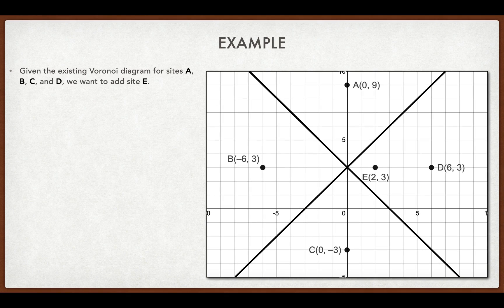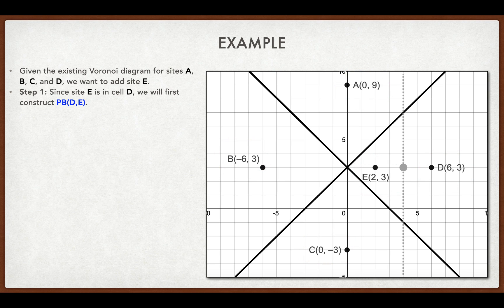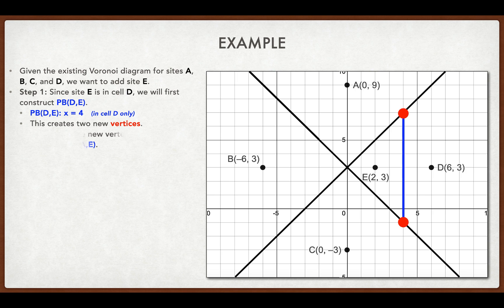Here's a final example. We're going to look at this diagram — it's got four cells already and I want to add a fifth site which I'm calling E. Since site E is already in cell D, I'm going to construct a perpendicular bisector between D and E. There it is right there — it has equation x equals 4. Notice how there are two new vertices created, and from here I can choose which vertex to start from to create the next perpendicular bisector.